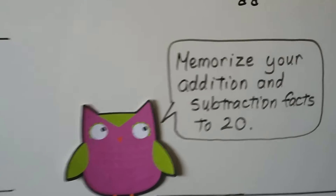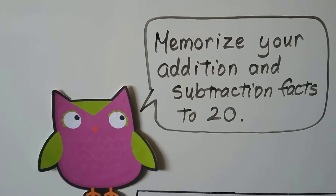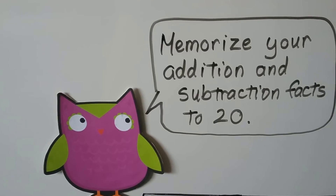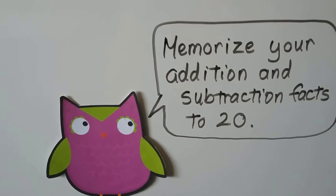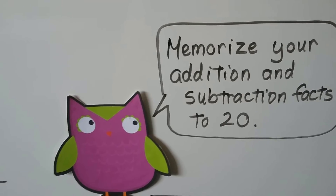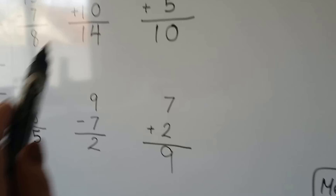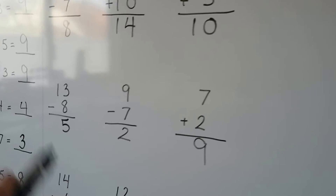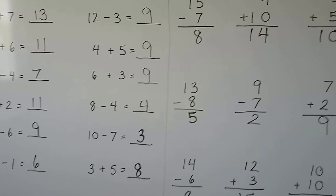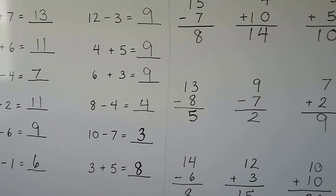You should really try to memorize your addition and subtraction facts to 20. You want to know them very quickly — as fast as you know 1 plus 1 is 2. That's how quickly you want to be able to answer addition and subtraction facts like these.